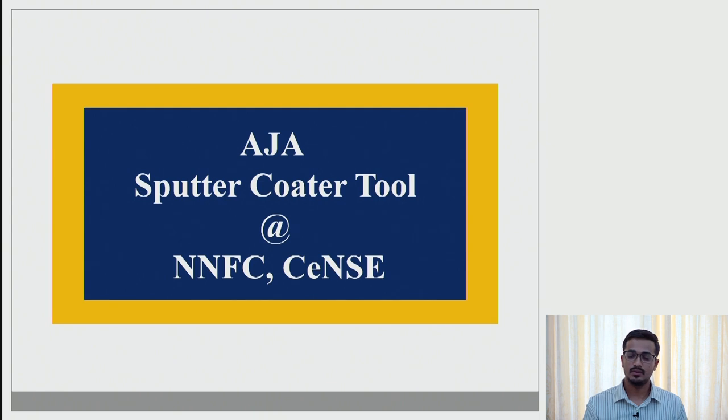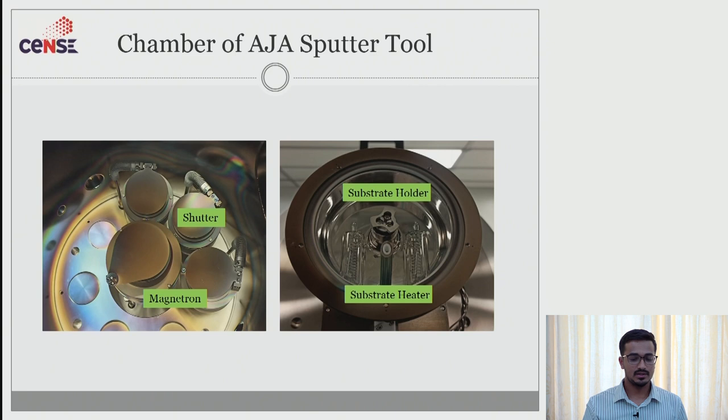Here is one more chamber which is meant for sputtering. There is a different kind of setup here wherein we have three different targets which is of two inch diameter and one magnetron which is of three inch diameter. As you can see these are all the magnetrons. These four are the magnetrons and this is where we actually house our substrate and this is a substrate heater.